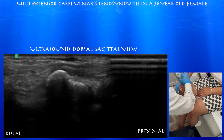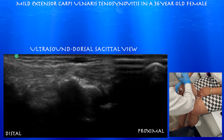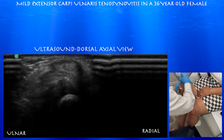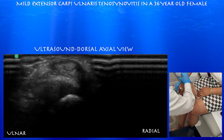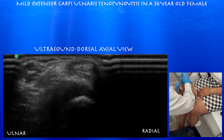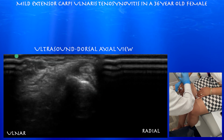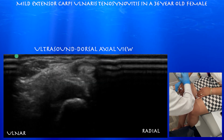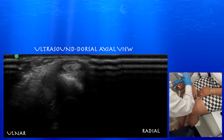You can also see the triquetrum — this is where she's tender. She has a little thickening. Here you can appreciate some mild-to-moderate tenosynovitis around the extensor carpi ulnaris tendon. The short axis showed a little bit of inflammation or tenosynovitis around that tendon as well.